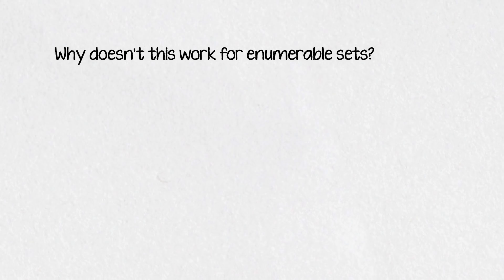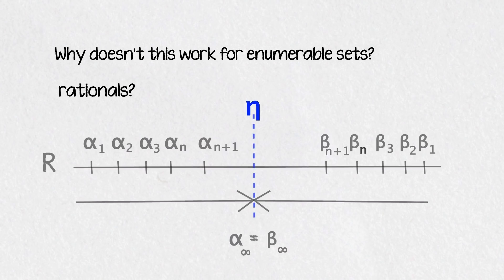But why doesn't this argument work for innumerable sets like the rationals? Well we're generating this number eta in a pretty complicated way. We're taking the limit of two infinite series and saying this number is what they converge to. But the way the real numbers are defined means we could prove that eta is real.